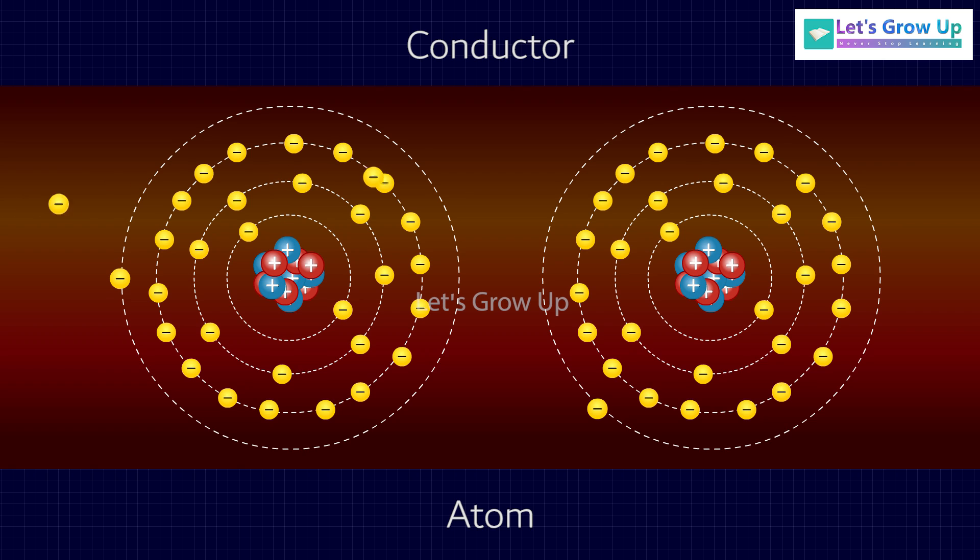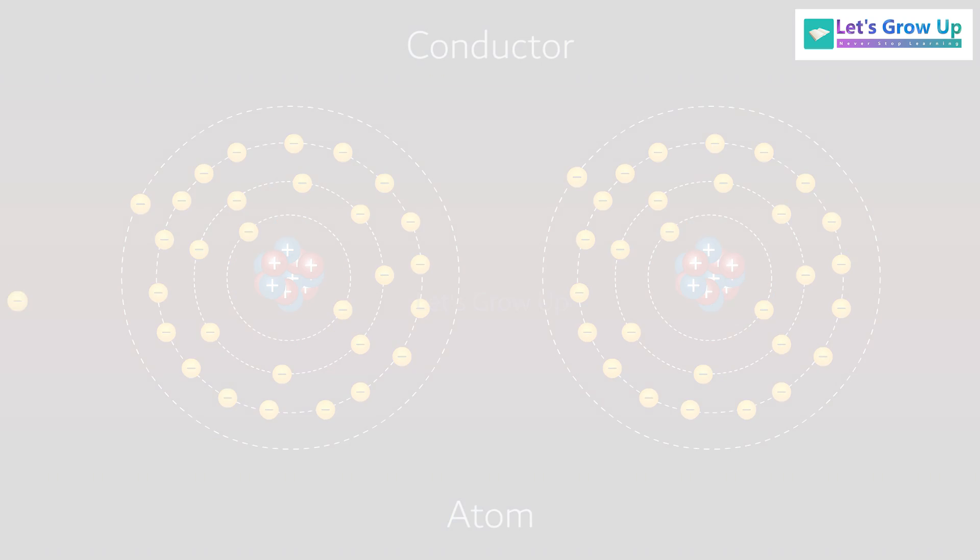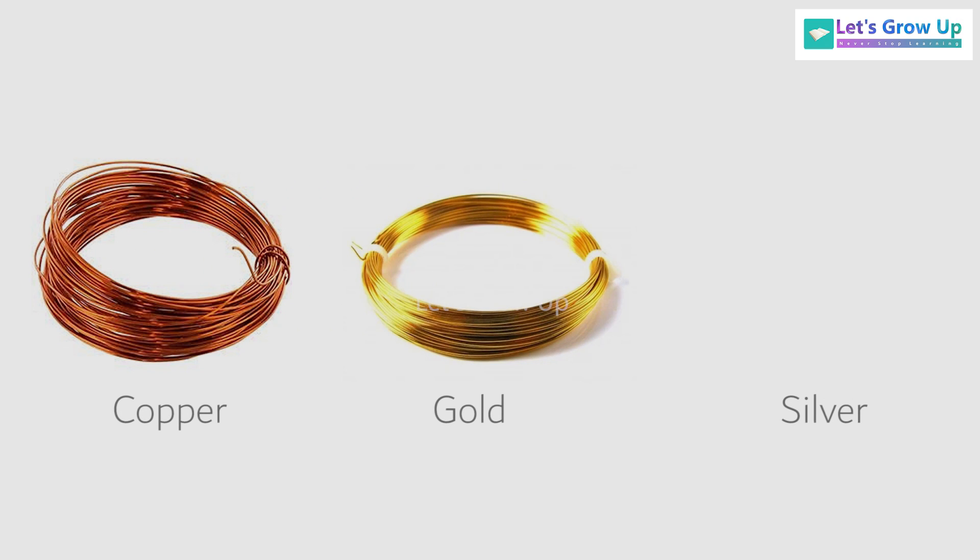Metals are the most common conductors of electricity. Although some metals are more conductive than others. Some examples like copper, gold, and silver.